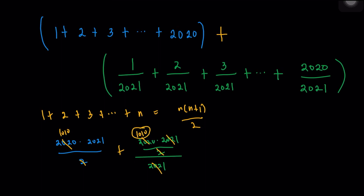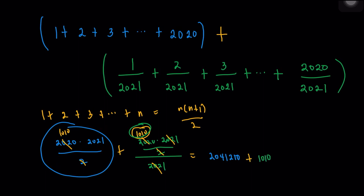The green sum is actually just 1010. So I add the blue sum and the green sum: the blue sum is 1010 times 2021, which equals 2,041,210, and the green sum is 1010. Taking the sum of these two, we get our final answer: 2,042,220. That's the sum of all possible real values of x. Hopefully you learned something new from this video, and I'll see you in the next one. Bye-bye.